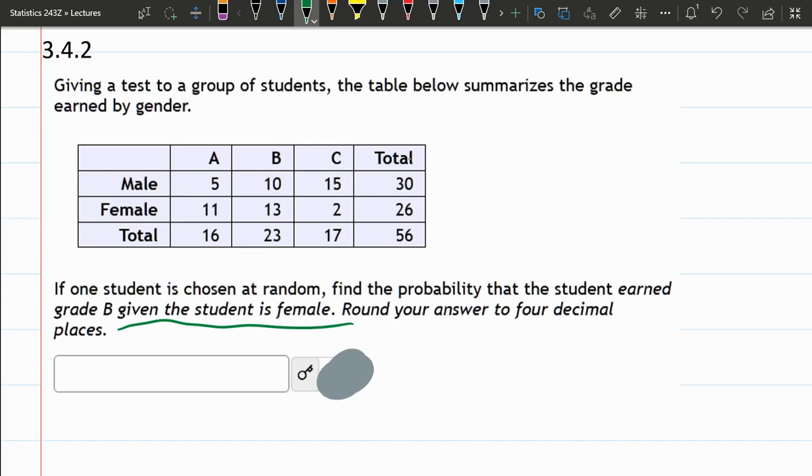Right away, given the student is female, we're only looking at this row right here. Now, favorable outcomes, the student earned a B, so favorable is 13.